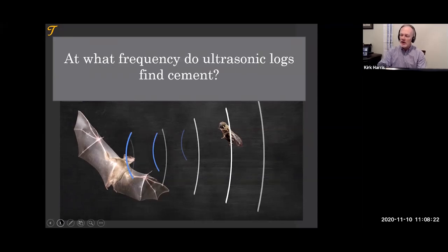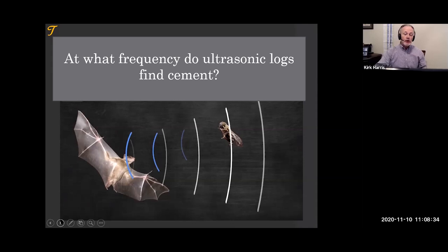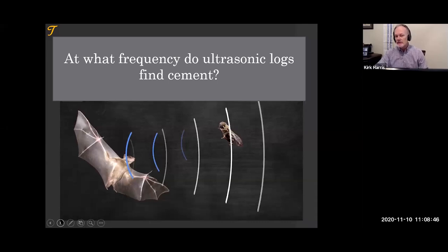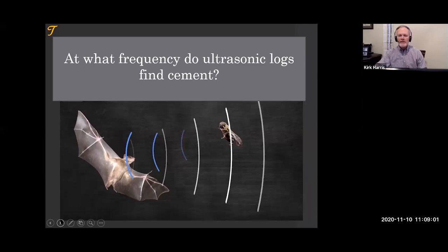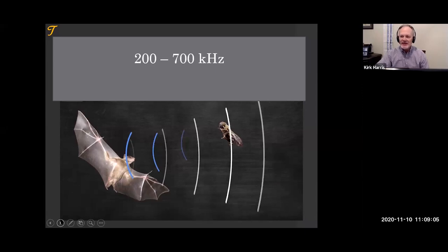At what frequency do ultrasonic logs find cement? We're going to do a quick review of bond logs, which operate at 18 to 20 kilohertz. We do have other tools, such as the segmented bond tool, that operate at different frequencies. The frequency that ultrasonic logs operate at is 200 to 700 kilohertz.